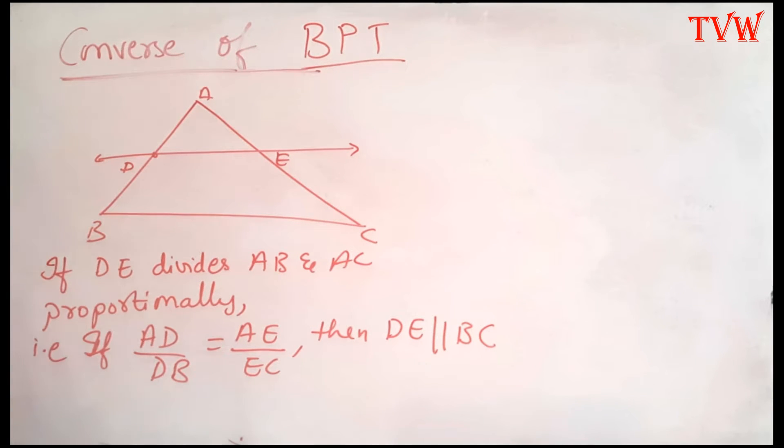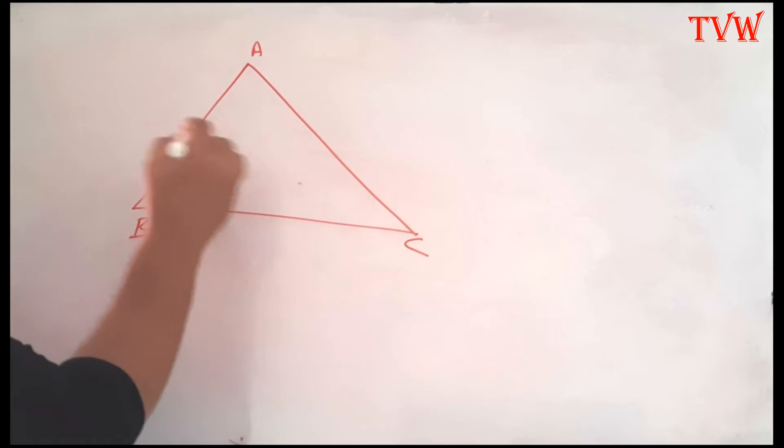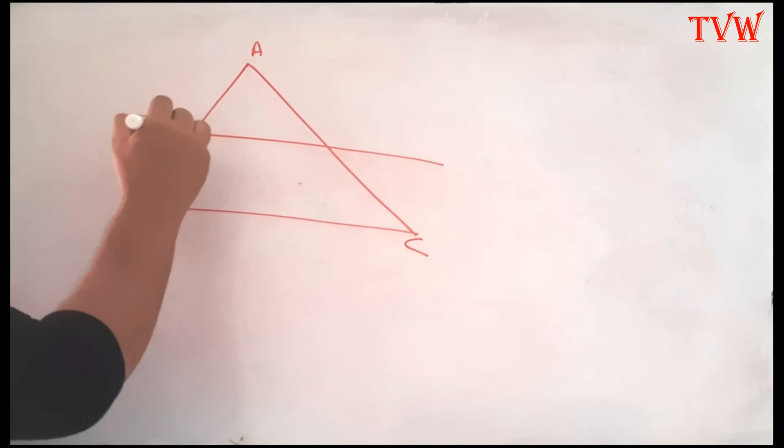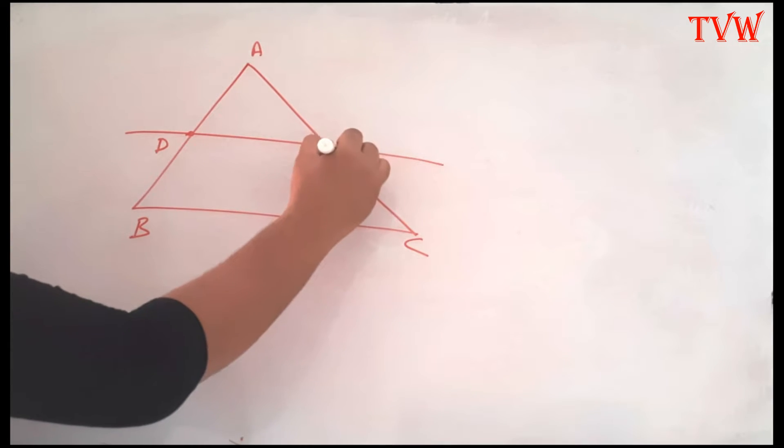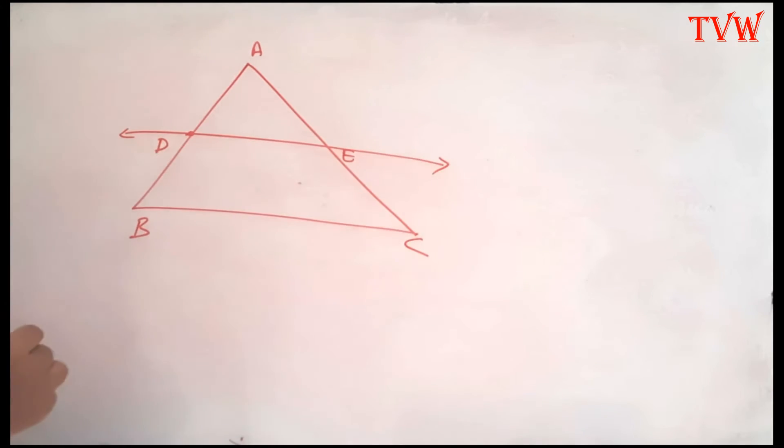Now, let us look at a problem where we apply these theorems. We have triangle ABC. There is a line that intersects AB at D and AC at E. The question says, if DE is parallel to BC, prove AD divided by AB is equal to AE divided by AC.